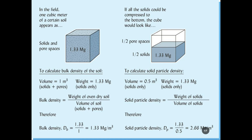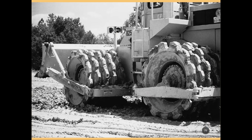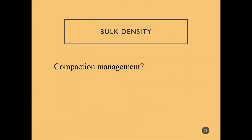This shows what happens when we take the pore space out and calculate bulk density and soil particle density. Bringing it back to an urban setting, development is probably our most common compaction event. How can we manage it in urban forestry?